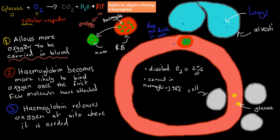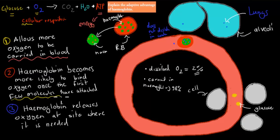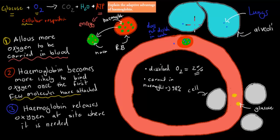The second advantage of hemoglobin is that as soon as the first molecule of oxygen binds, hemoglobin becomes more likely to bind further oxygen. Once the first few molecules have attached and come over from the alveoli, many more will follow. This way, we can make sure all that oxygen goes onto our red blood cells and hemoglobin.